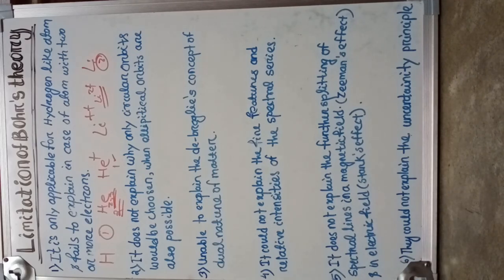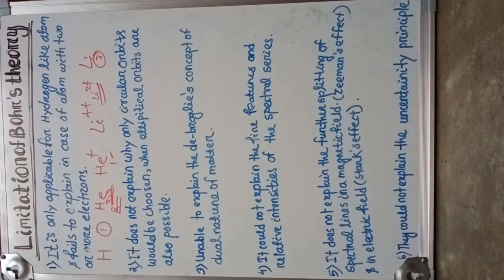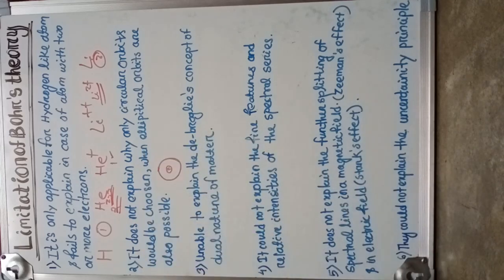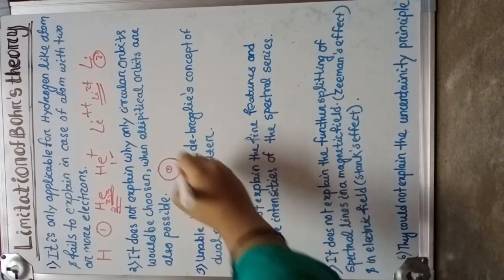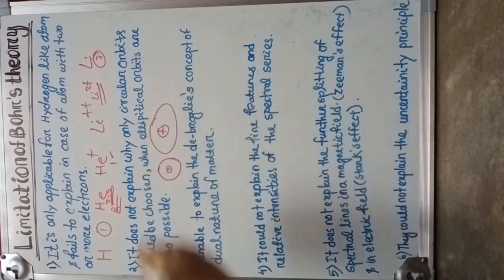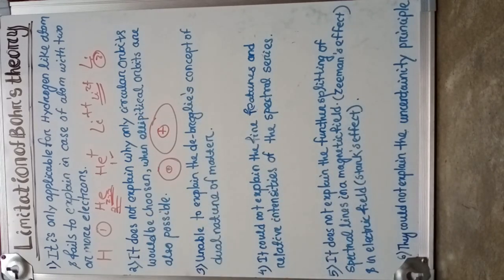The second limitation: Bohr's theory does not explain why only circular orbits are considered, and whether elliptical orbits are possible or not. If we consider an atom, we consider the orbit arranged in a circular manner, but Bohr's theory does not explain whether elliptical orbits are possible.